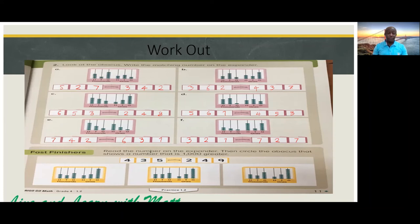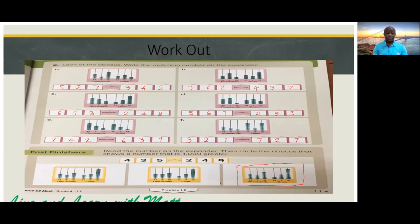Fast finisher: read the number on the expander, then circle the abacus that shows a number that is one thousand greater than the number shown here. So we have four hundred and thirty-five thousand, two hundred and forty-nine — what number is one thousand greater? Circle the abacus that shows the number. The correct answer is the abacus that shows four hundred and thirty-six thousand, two hundred and forty-nine.